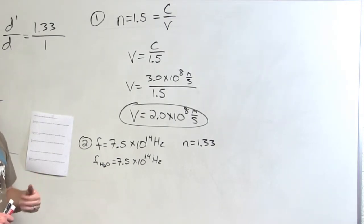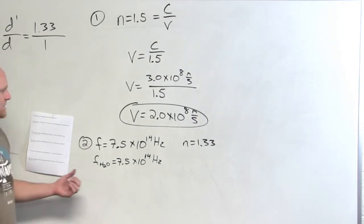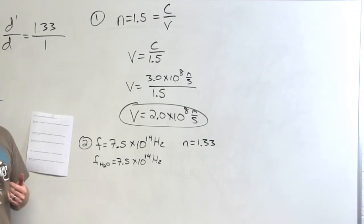And that frequency is not changing. So the same number of photons leaves the air every second as the same number that enters the water every second. Now they slow down when they hit the water, but the same number reaches the water each second. And that's why the frequency doesn't change. But because they slow down, the wavelength is going to change as well.